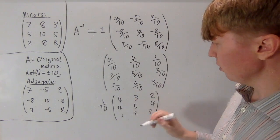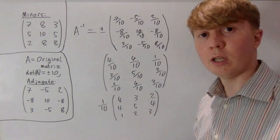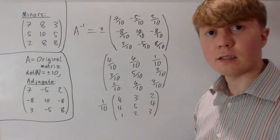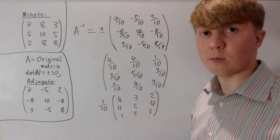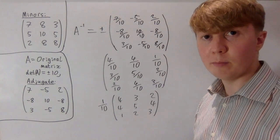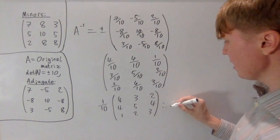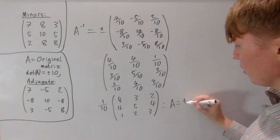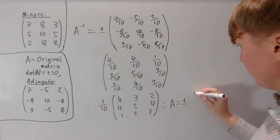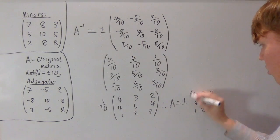This transpose gives us our adjugate matrix. All we need to do now is divide by the determinant of A inverse. We know the determinant of A is plus or minus 10, so the determinant of A inverse is plus or minus 1 tenth. Dividing by plus or minus 1 tenth means multiplying by plus or minus 10, which cancels the factor of 1 tenth. So our original matrix A is plus or minus: 4, 3, 2, 4, 5, 4, 1, 2, 3.